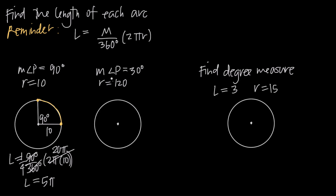Let's do another example. We have the interior angle measure of angle P equal to 30 degrees, and the radius is going to be 120. If we go ahead and draw in the radius on our circle, the radius is 120 and the angle measure is 30 degrees.